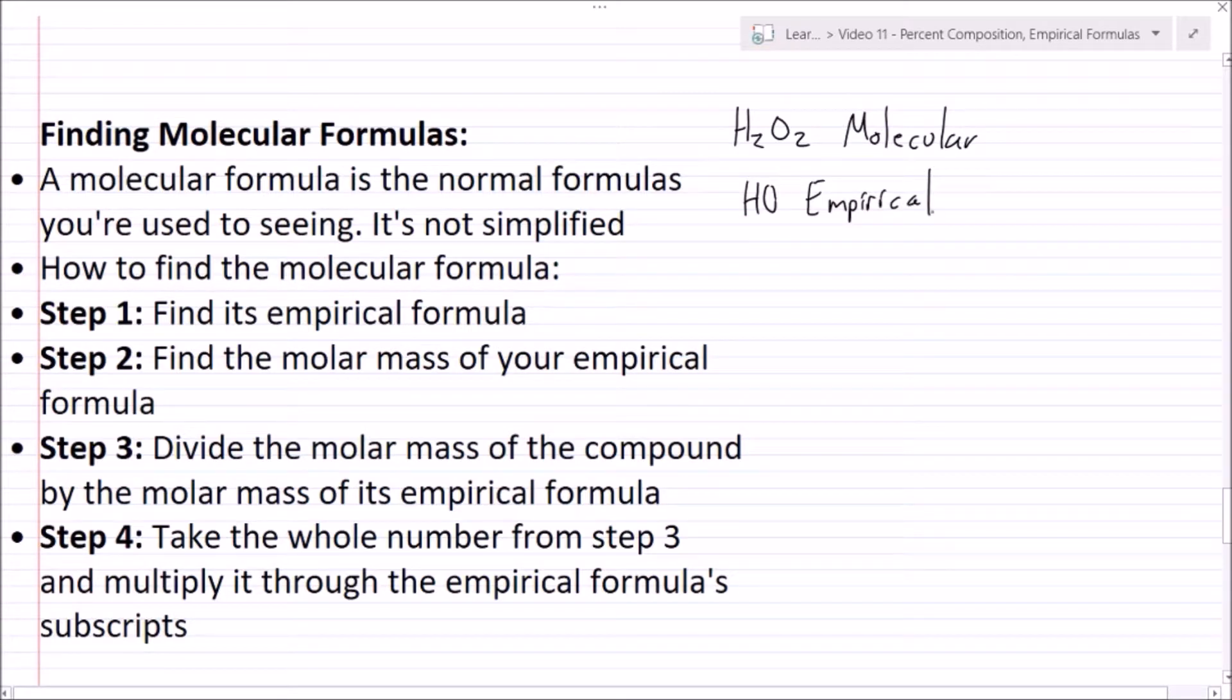A lot of times you'll be asked to find the molecular formula, and it's very similar to empirical but just a few extra steps. So step 1: we're going to find our empirical formula. Step 2: find the molar mass of your empirical formula. Step 3: divide the molar mass of the compound, or your mystery compound, by the molar mass of its empirical formula, and this is going to give you a whole number - might give you 1, might give you 5, whatever. And so you're going to then go to step 4, which is taking that whole number and multiplying it through the empirical formula subscripts.